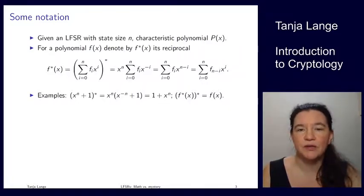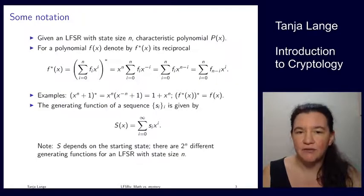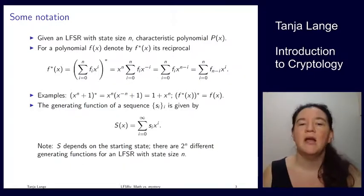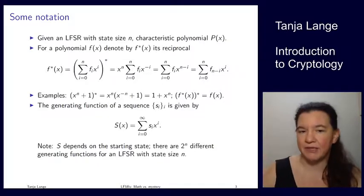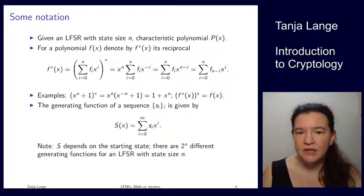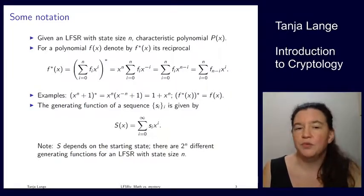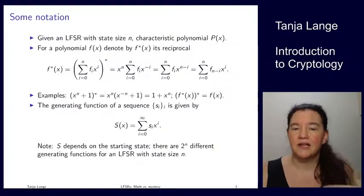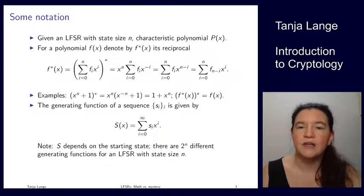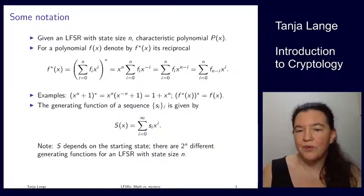The other thing we're going to be using throughout this lecture is a generating function. If you're given a sequence running from i equals zero to infinity, we introduce a power series that belongs to it, which takes the s_i and multiplies by x to the i. This generating function does depend on the starting state — for instance, if you have the all-zero sequence, this will be just the all-zero power series. For a fixed LFSR you'll get 2 to the n different generating functions, but we're going to focus on the common properties that exist independent of the state.